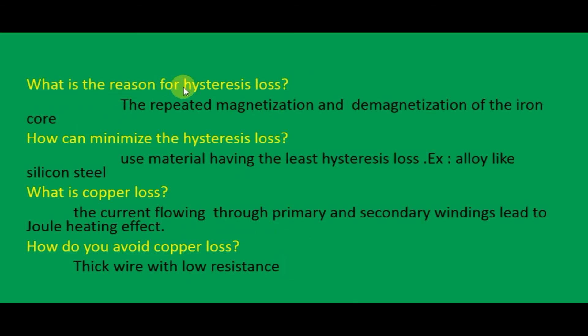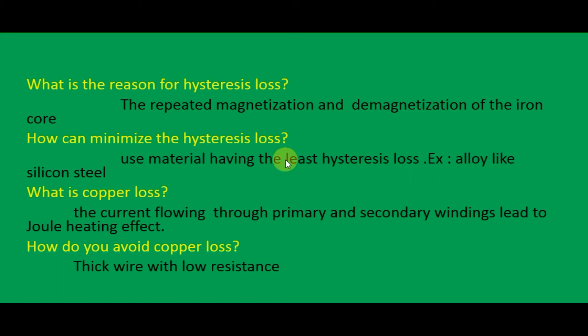What is the reason for hysteresis loss? The repeated magnetization and demagnetization of the iron core — the magnetization of the iron core is repeatedly reversed by the alternating magnetic field. That is the reason for hysteresis loss. How can we minimize hysteresis loss? Use materials having low hysteresis loss, for example alloys like silicon steel.